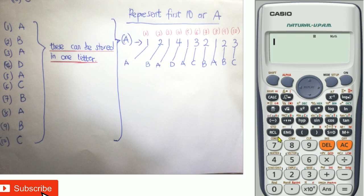So we have one as A, two as B, three as A, four as D, five as A, six as C, seven as B, eight as A, nine as B, and ten as C.